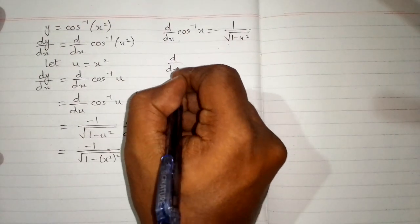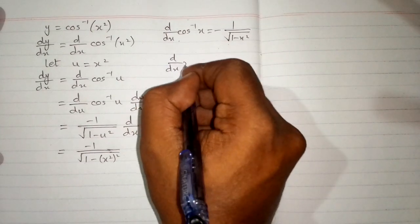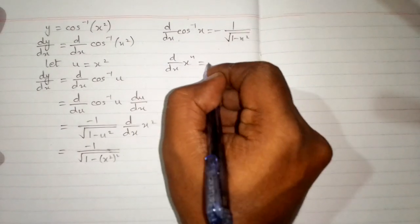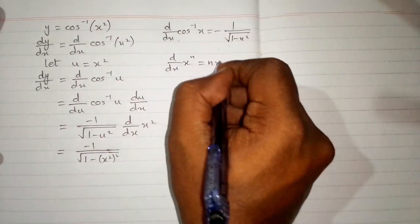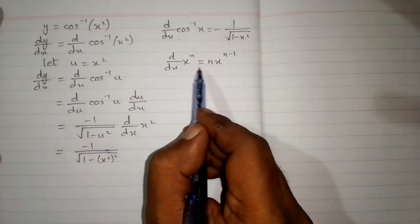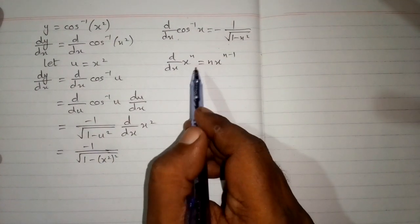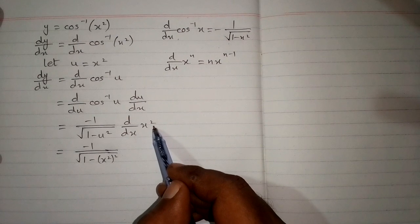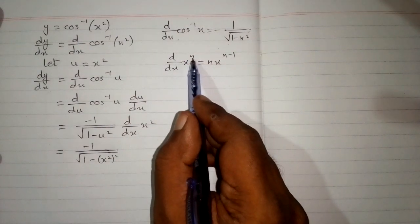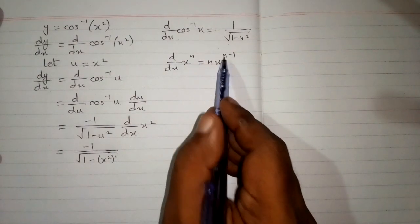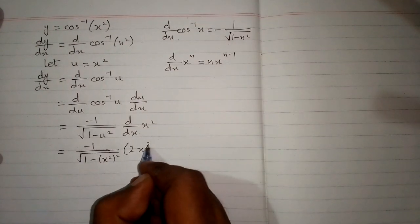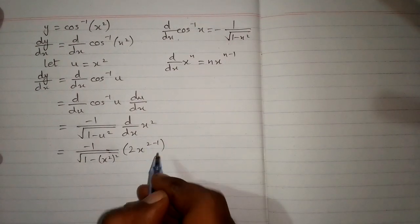Also we can put the value of u over here, and find the derivative of x square using the formula d by dx of x to the power n equals n times x to the power n minus 1. This is the power rule of differentiation. So we can see that we have 2 in place of n, so we will put 2 over here, giving us 2 times x to the power 2 minus 1.